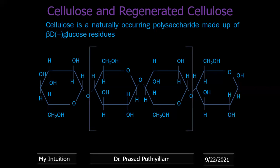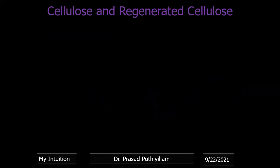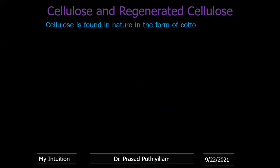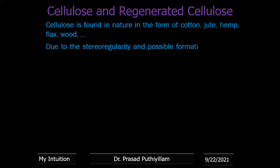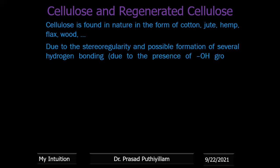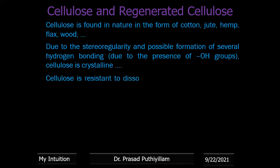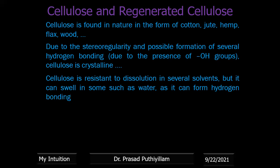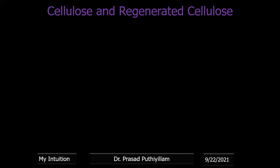Cellulose is a naturally occurring polymer. Due to stereo-regularity in its structure, it is regularly arranged and highly crystalline. Several hydrogen bonds are possible because of the hydroxyl groups. It is resistant to dissolution in many solvents, but it can swell in polar solvents like water by forming hydrogen bonds with water — it swells but does not dissolve.